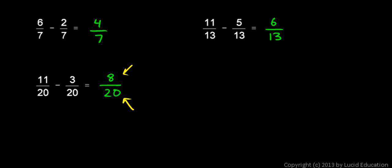And I notice that eight and twenty are both even numbers, so they can both be divided by two. So I can reduce this to four tenths. And when I do that, I see the four and the ten are both still even numbers, so I can divide by two again. And I end up with two fifths, and that's in the lowest possible terms.